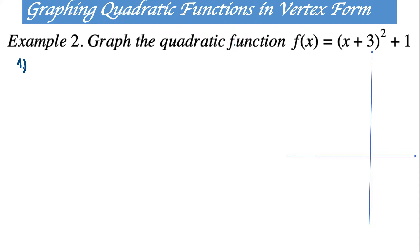Number 1: let's look at the factor a in front of the function. That indicates a stretch or compression factor. Here a is equal to 1, so a is greater than 0. What does it mean? The parabola will be concave up, or is going to face upward.